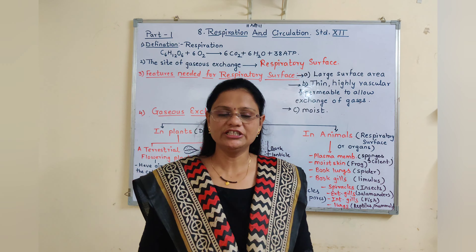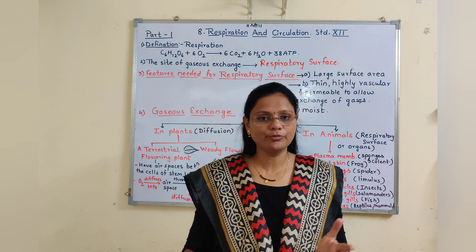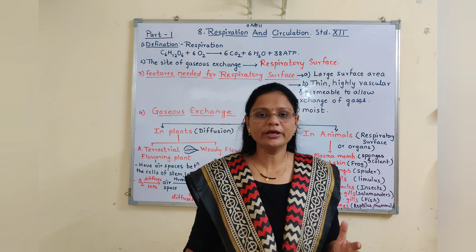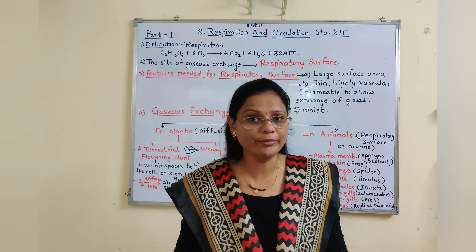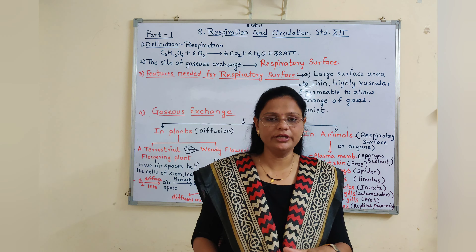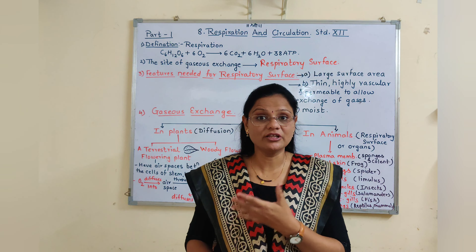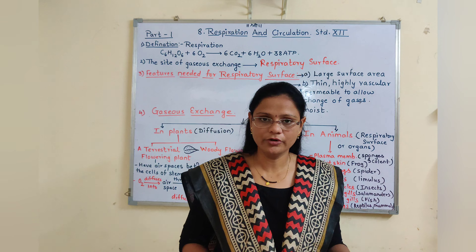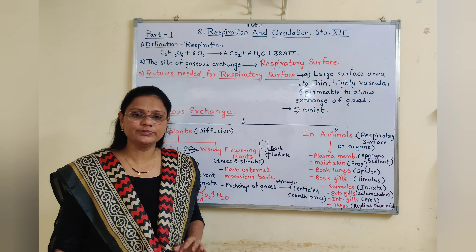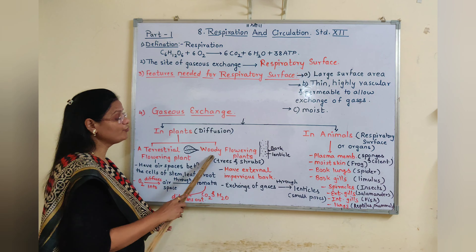Now we are going to see gaseous exchange. The living world is divided into two kingdoms — plants and animals — and each has different requirements for gaseous exchange. In plants, gaseous exchange takes place through diffusion. In terrestrial flowering plants, they have minute openings or pores on stems, leaves, and roots, with air spaces through which gas exchange occurs.